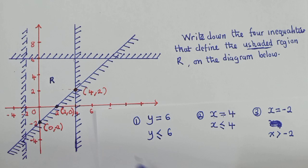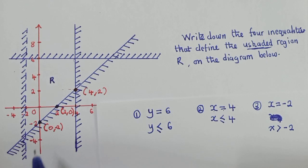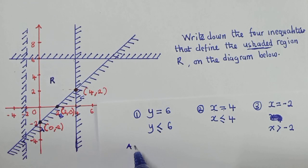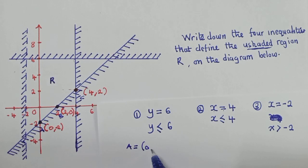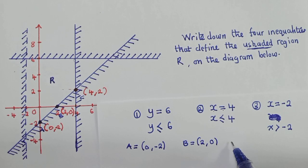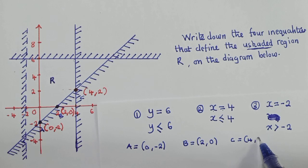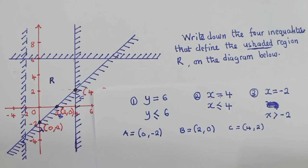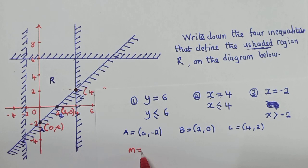We label these as points A, B, and C. Point A is (0, −2), point B is (2, 0), and point C is (4, 2). Once we have these points, we need two formulas: the formula for finding the gradient, and the formula for finding the equation of a straight line.